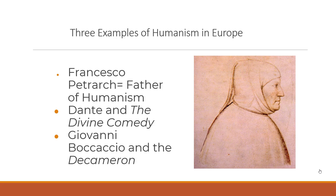Now let's look at three examples of humanism in Europe. First is the father of humanism, Francesco Petrarch. He is the founder of the humanist movement in Italy and was one of the first collectors and translators of ancient Greek and Roman writings, influencing other Italian humanists beginning in the mid-1300s. Second is Dante, who wrote the Divine Comedy between 1308 and 1320, exploring human nature, sinfulness, and the soul after death—examining hell, purgatory, and paradise.